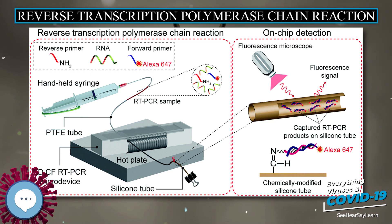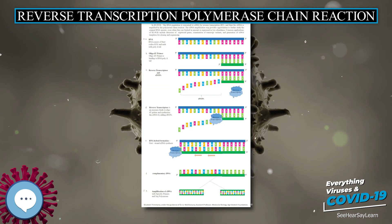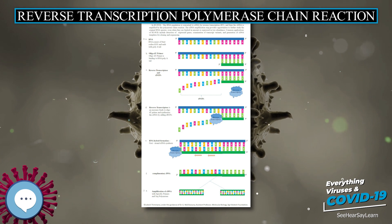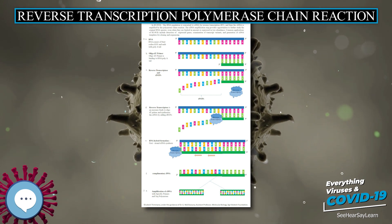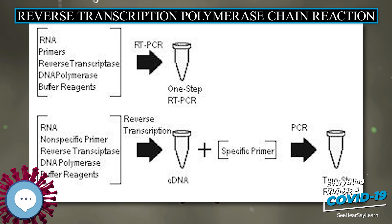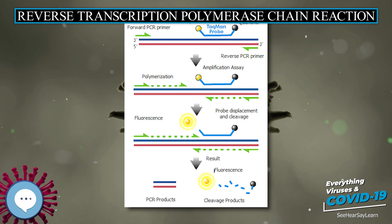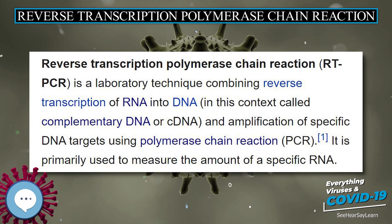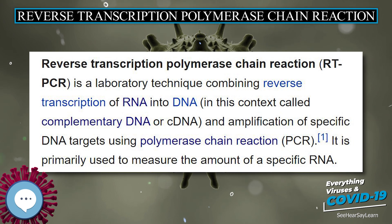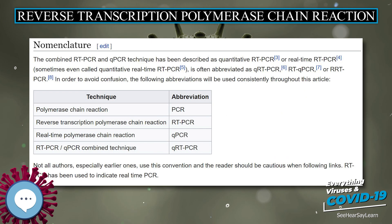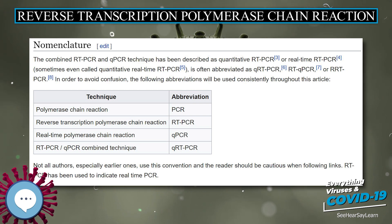RT-PCR has since displaced northern blot as the method of choice for RNA detection and quantification, and has risen to become the benchmark technology for the detection and comparison of RNA levels for several reasons: it does not require post-PCR processing, a wide range — greater than 10^7-fold — of RNA abundance can be measured, and it provides insight into both qualitative and quantitative data.